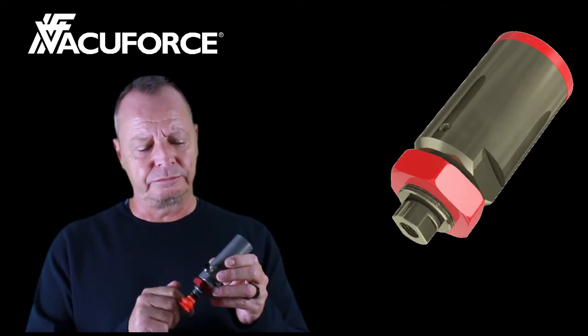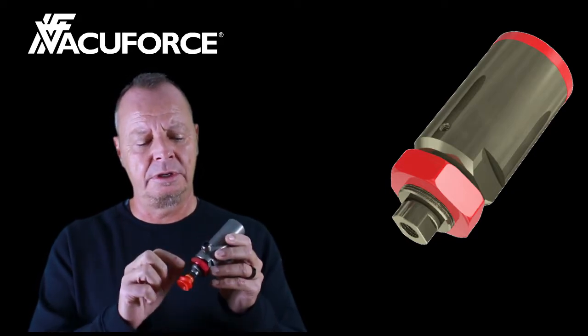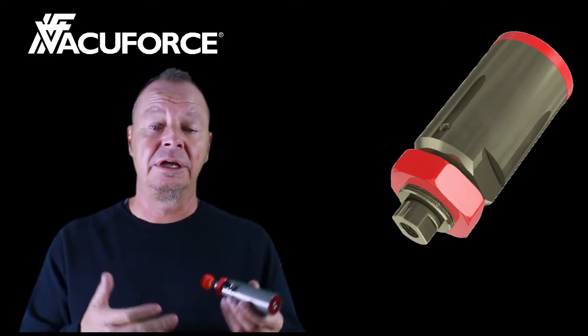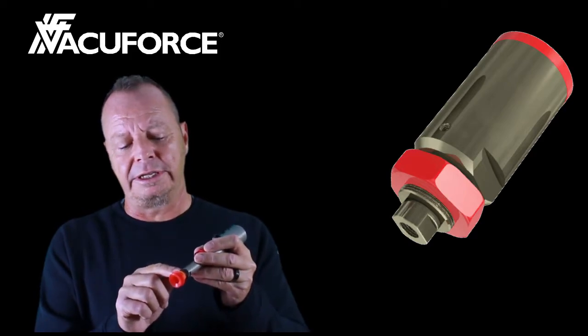It comprises two ports, one on the body and one on the end of the cylinder rod. This port here is connected to a vacuum source such as a vacuum pump or air-powered vacuum generator. The vacuum cup goes on the end of the cylinder rod here.